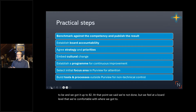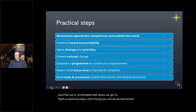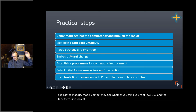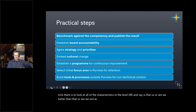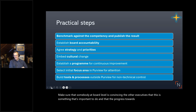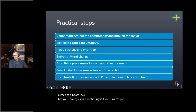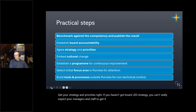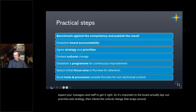Here are practical steps you should take. Benchmark your current position against the maturity model competency — see whether you're at level 300. Look at all the level 300 characteristics and ask: is that us? Are we better than that or not as good? If not as good, write that down as an action item and go fix it. Make sure somebody at board level is convincing the other executives that this is important, and that progress towards sufficient compliance is owned at board level. Get your strategy and priorities right — you can't really expect managers and staff to get it right if the board hasn't laid out strategy. Then embed the cultural change.